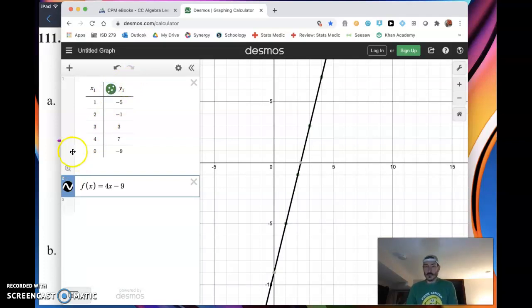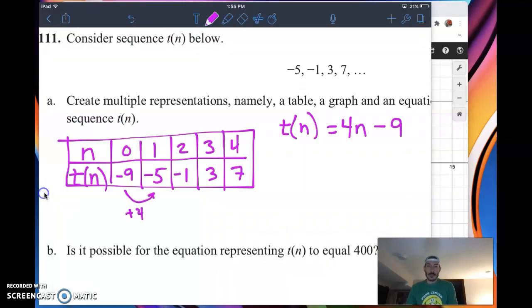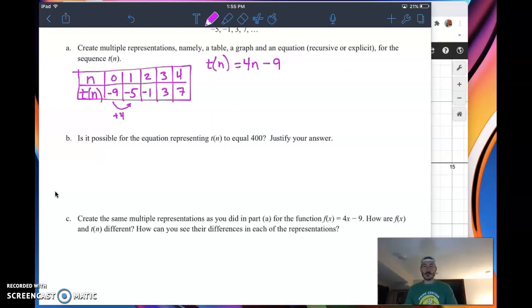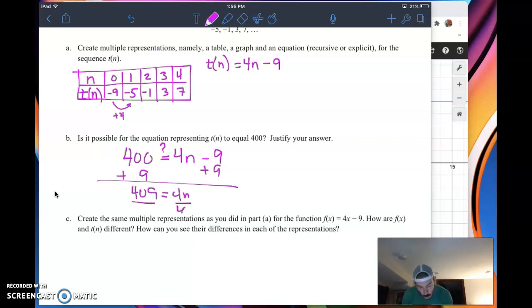f of x, or y equals 4x minus 9. Sure enough, it does go through and nail all these points. But the question we're investigating is, are they the same? I can turn this off and turn it back on. I can turn this off and turn it back on. Do they have some similarities? Of course they do. But the question again, are they the same?